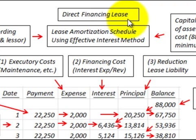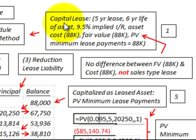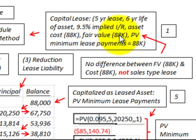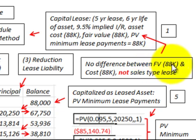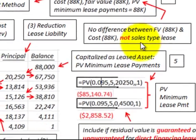We're going to be looking at a direct financing lease and setting up a lease amortization schedule, recording it on the balance sheet for both the lessee and lessor. Our example is a five-year lease with a six-year asset life, 9.5% implied interest rate, asset cost of $88,000, fair value of $88,000, and present value of minimum lease payments of $88,000. Since there's no difference between fair value and cost, this is not a sales-type lease.